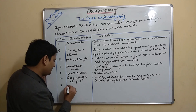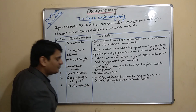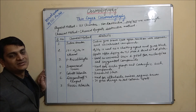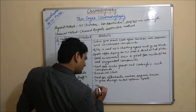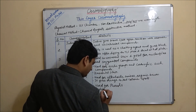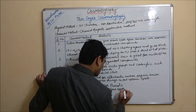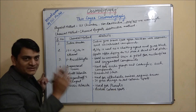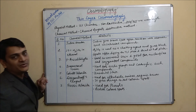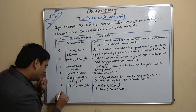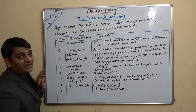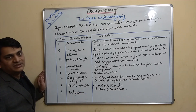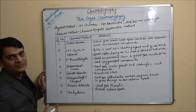The seventh is ferric chloride. Ferric chloride is used for detection of phenolic compounds and it gives red color spots. The eighth one is ninhydrin. Ninhydrin is used for detection of amino acids, amino sugars, etc.